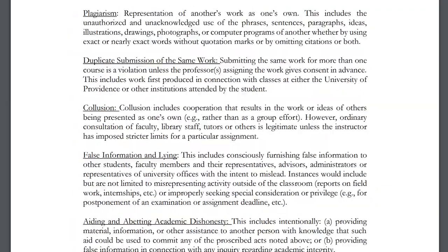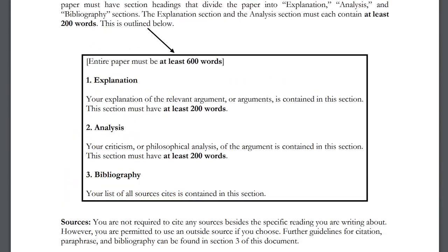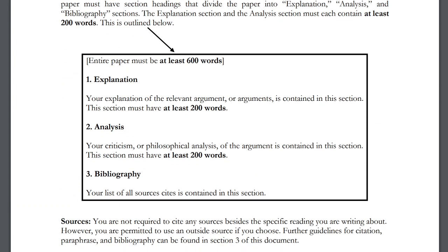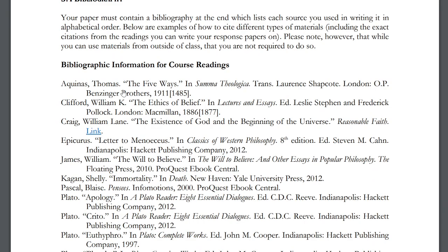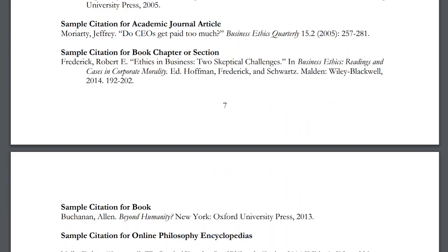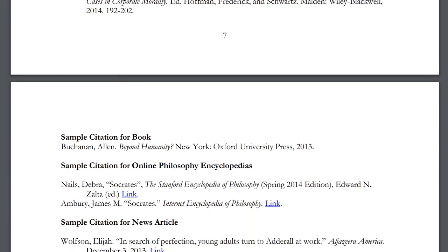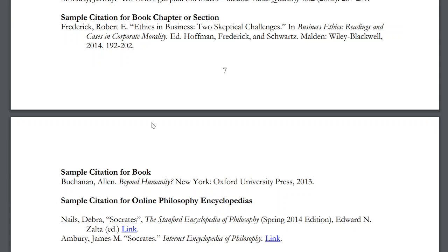You're permitted but not required to use additional sources. Many of the best papers focus in detail on the reading without citing other sources. However, if you do cite other sources, their bibliographic information must also be included. The bibliography section of the guidelines document also includes sample citations for an academic journal article, a book chapter, and an entire book — just follow those formats.